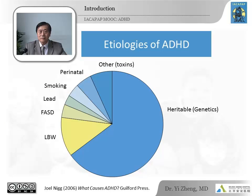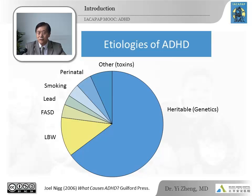The etiology of ADHD is still undetermined. ADHD is a familial disorder with a strong genetic component. The heritability has been estimated at 76%, one of the highest among mental disorders, but still no single candidate gene can explain the disorder. The disorder likely emerges from the interaction between genetic and environmental factors. Among the environmental factors, prematurity, intrauterine exposure to tobacco, and lower birth weight are most consistently associated with ADHD.